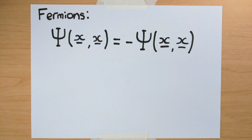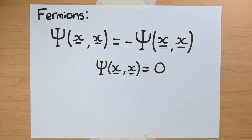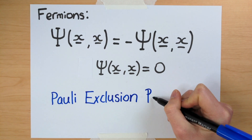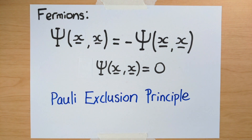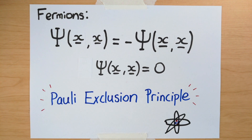What would happen if I tried to put two identical fermions in the same location? If I swap their locations, the wave function picks up a minus sign as usual. But swapping them doesn't change their positions — both particles are still at position x. That means the wave function is zero when the particles are both at the same location. We've just witnessed the famous Pauli exclusion principle for fermions: no two identical fermions can occupy the same location. The Pauli exclusion principle is responsible for the structure of atoms and basically all of chemistry, so this minus sign can have some pretty important physical consequences.